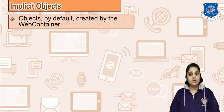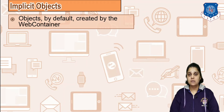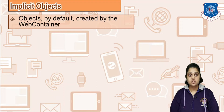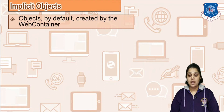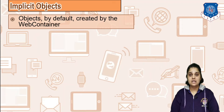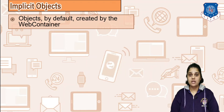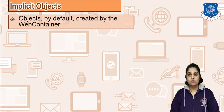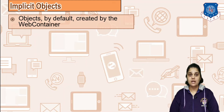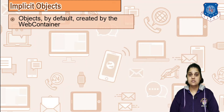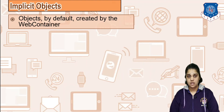Implicit means something that by default implies. There are certain objects in JSP which are by default given to you. These are given by the web container — your Tomcat or GlassFish. Any web container creates these objects when a particular JSP is loaded into memory and instantiated. These objects created by Tomcat are handed over to you at instantiation.